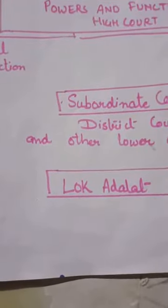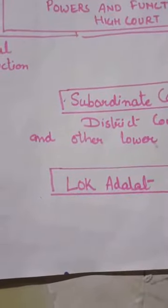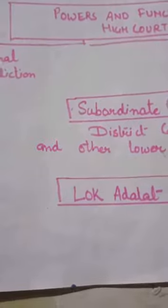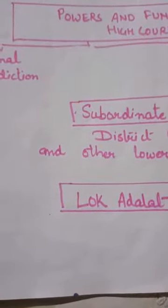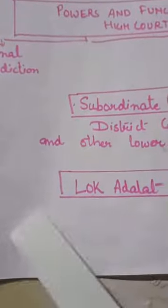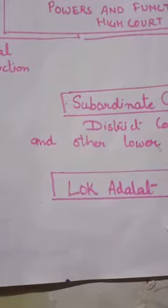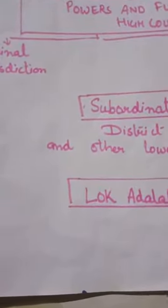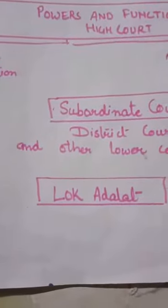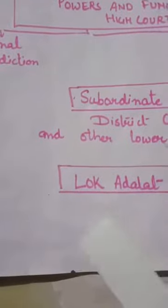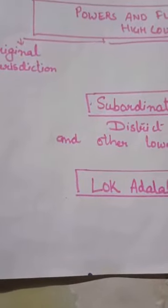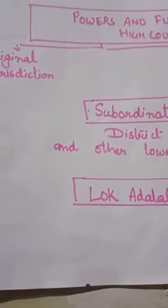In Lok Adalat, cases are settled through compromise and conciliation. It is presided over by a sitting or retired judge along with two other members — generally a lawyer and a social worker. Court fees are used as the basis for resolving cases. Importantly, there is no appeal against the decision made here, because cases are solved through mutual consent of both parties. When both parties mutually want to resolve their case, it is done with the help of Lok Adalat. With this, the chapter is completed. The exercise part will also be posted in Google Classroom.